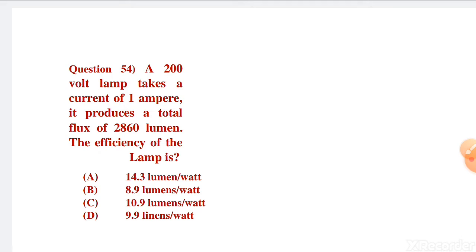The efficiency of the lamp is: option A, 14.3 lumens per watt; B, 8.9 lumens per watt; C, 10.9 lumens per watt; D, 9.9 lumens per watt.